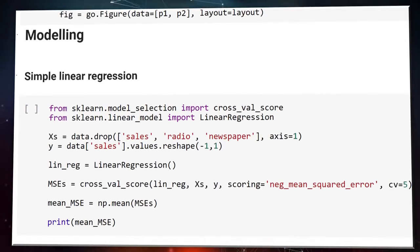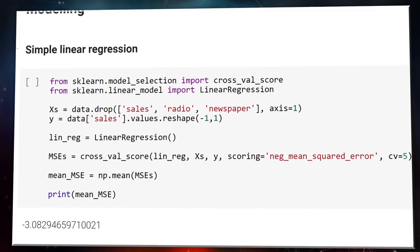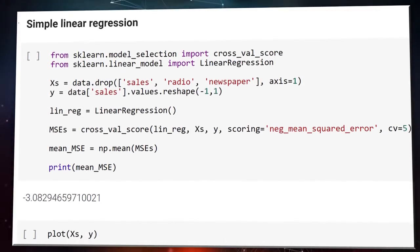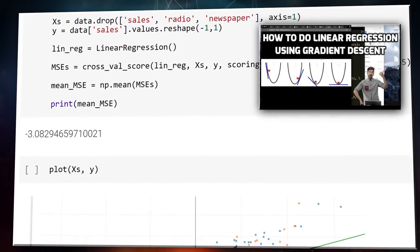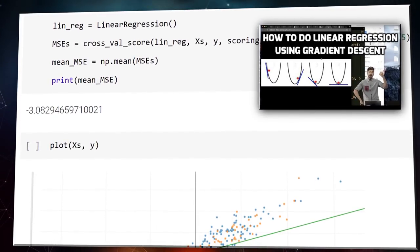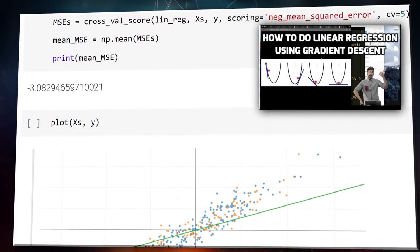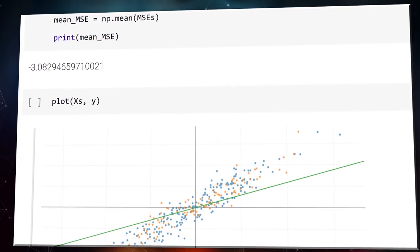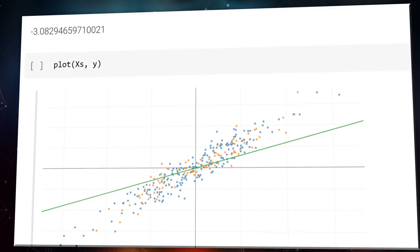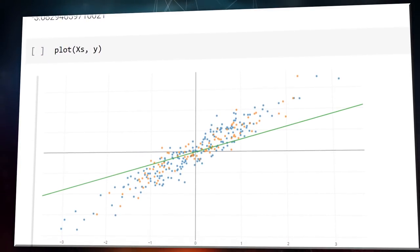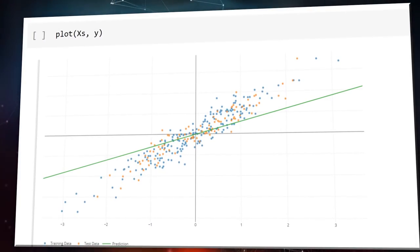We then use this error to update the values for b and m using a technique called gradient descent. Rather than explain how that works, I'm going to link you to my video aptly titled Linear regression using gradient descent in the video description. When we perform this simple linear regression, we'll find that there does seem to be a relationship between these two variables. The more we spend on TV ads, the higher our sales are.